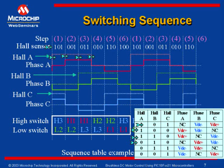Every sequence has two windings connected across the power supply and the third winding left open, as seen in the sequence example.